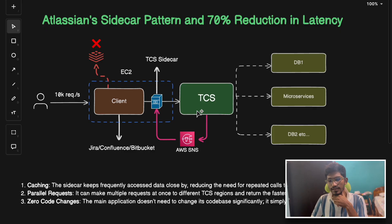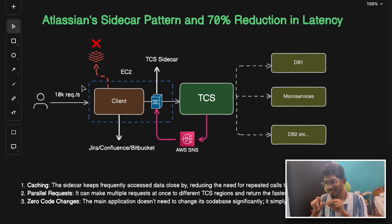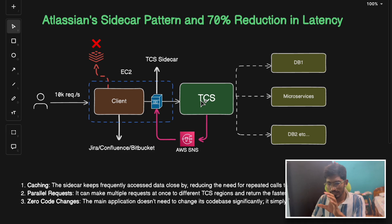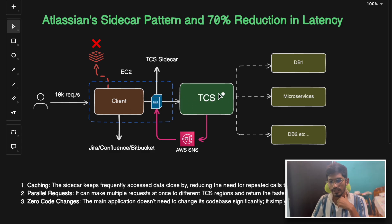Without the sidecar pattern, every click could require multiple requests to different servers across the world, resulting in increased latency. After analyzing their entire architecture — where the client is directly connected to the TCS server — Atlassian realized that their own applications like Jira, Confluence, and Bitbucket were becoming bottlenecks, each making numerous calls to the TCS service.